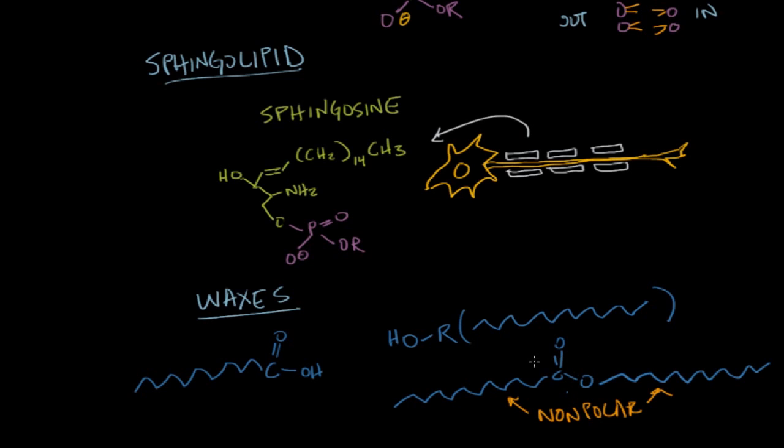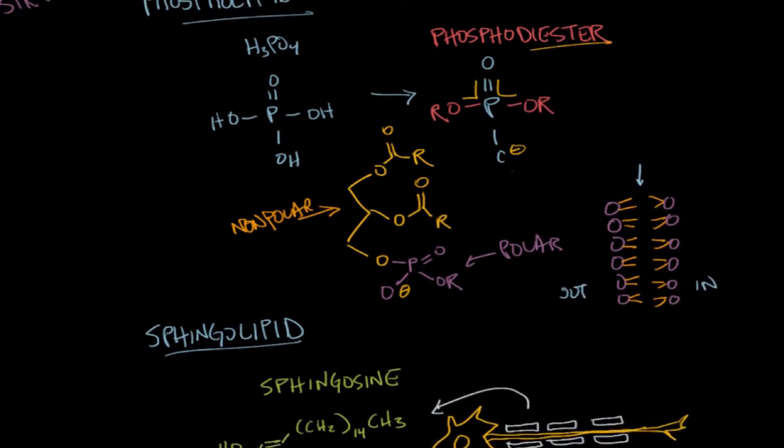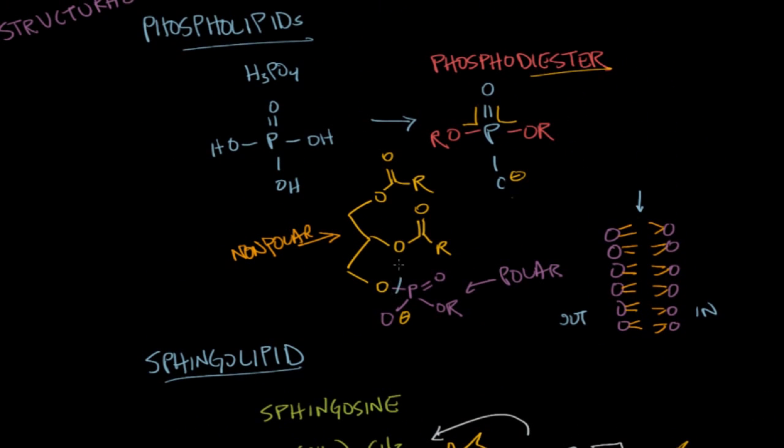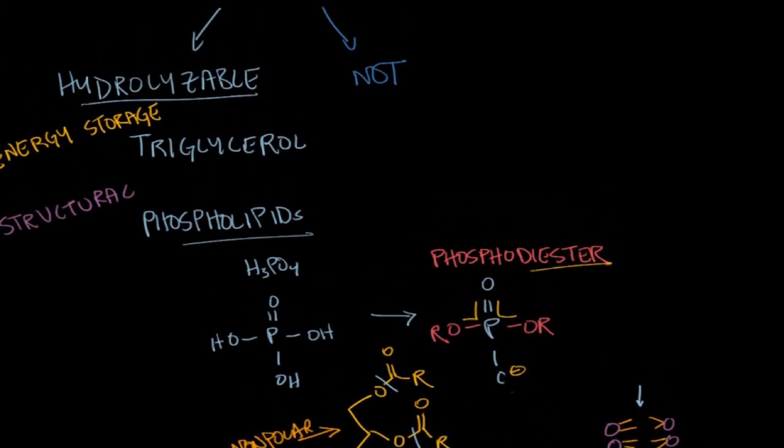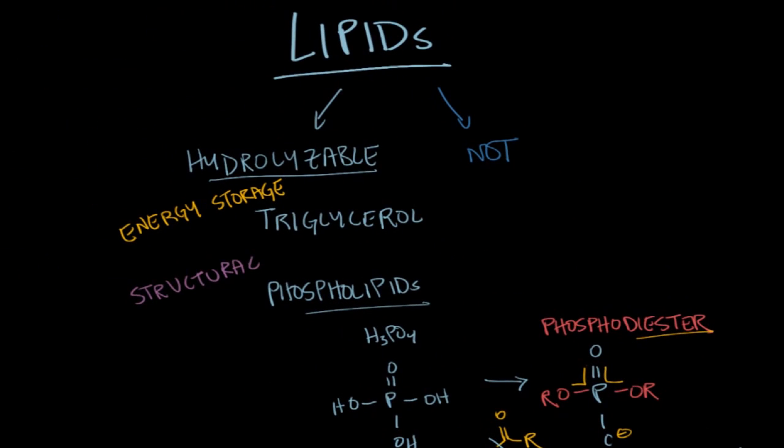And they're hydrolyzable. I just want to beat this point home because they've got this ester group right here, carbon double bonded to oxygen with an OR group that can be hydrolyzed. You can do an ester hydrolysis reaction. Same thing with sphingolipids, they've got this ester group that you can break down. And you can do the same thing with phospholipids. We have this ester bond right here that we can hydrolyze, and we could do it with these bonds as well, just like we could with triglycerols. So all of these are lipids that can be broken down into smaller units through hydrolysis reactions.